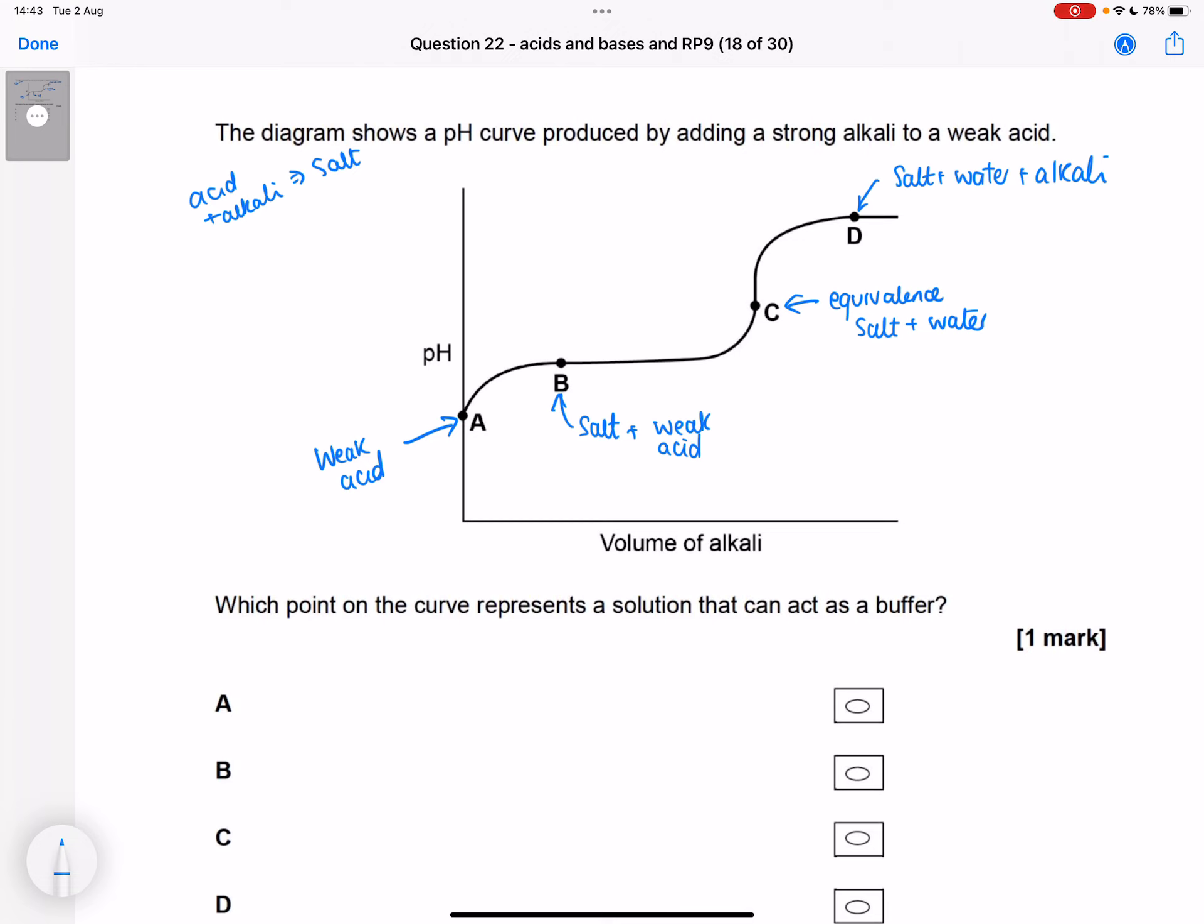pH is remaining constant at B because we've formed a buffer until we hit the point where we've neutralized all of our weak acid. And now we don't have a mixture of weak acid and salt anymore, we've just got salt and water.